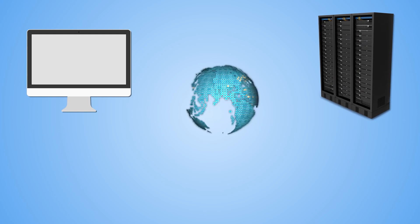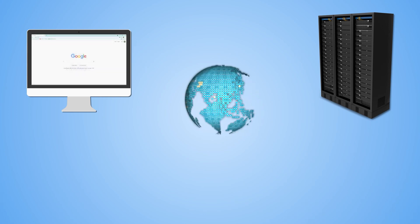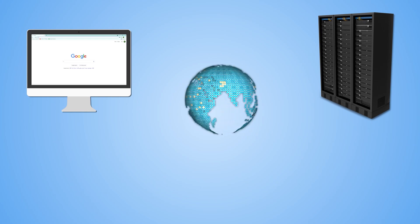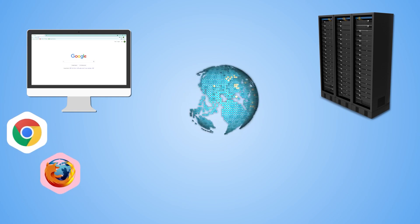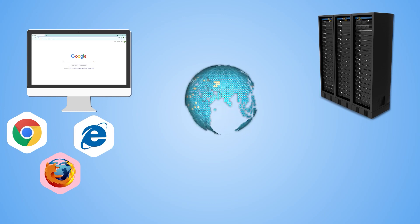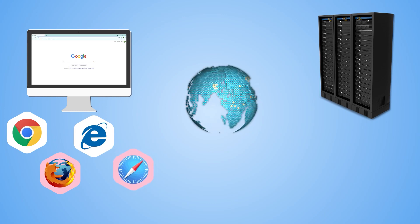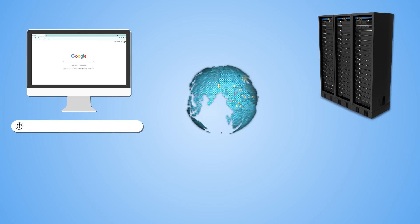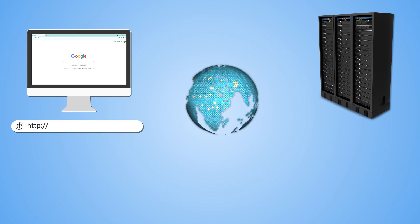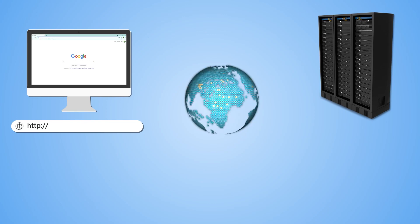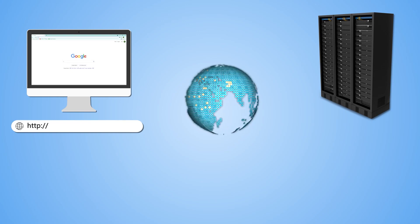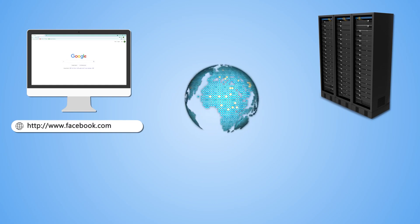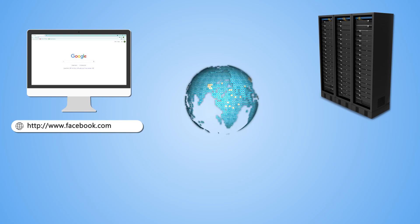What really happens is you have your client computer and the server, and you require an active internet connection. The user installs a software called a browser. Different companies have created their own browsers — Google has Chrome, Mozilla Firefox, Microsoft has Internet Explorer now rebranded as Edge, and Apple has Safari. All these browsers give you a bar on top called the URL bar. You go to the URL bar and type HTTP, indicating you want to connect to the server using the HTTP protocol, followed by the server address — for example, www.facebook.com.